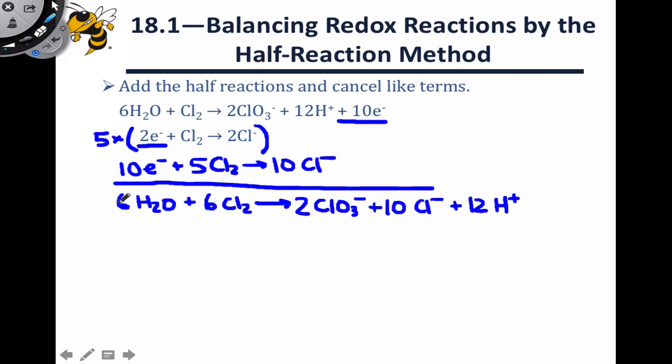It's worth noting that all of these coefficients, all of these stoichiometric coefficients are even, and so we can divide them all by two to get to a balanced chemical equation that's sort of the lowest common denominator, if you will. 3H2O plus 3Cl2 goes to ClO3- plus 5 Cl- and 6 H+. And here's our final balanced equation.